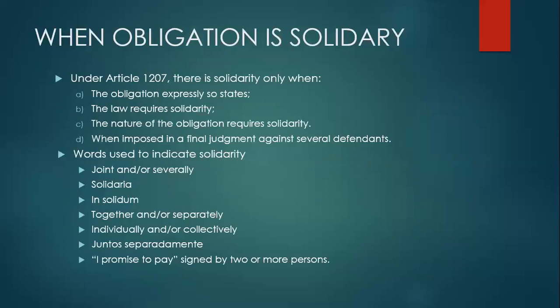We learned that if the obligation does not contain any express stipulation of solidarity, nor does the nature or law require it, the presumption is that a collective obligation is joint. So when does an obligation become solidary? Under Article 1207, there is solidarity only when: (1) the obligation expressly so states, (2) the law requires solidarity, (3) the nature of the obligation requires solidarity, or (4) when imposed in a final judgment against several defendants.